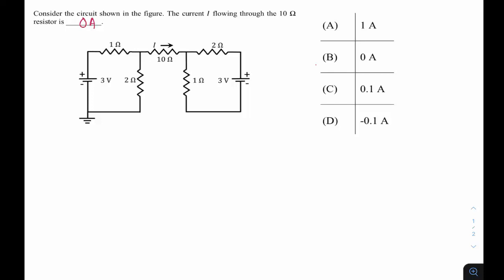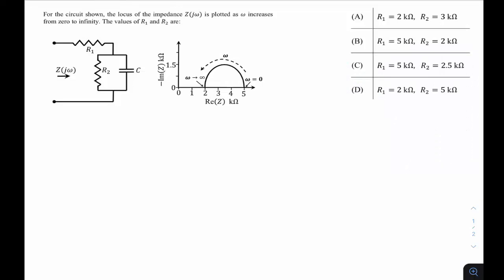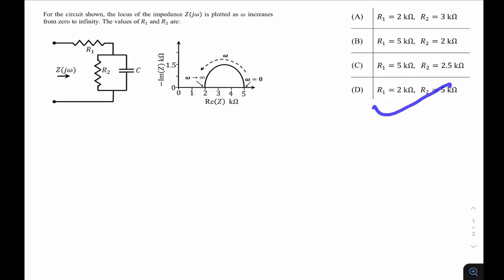The next question from GATE 22 ECE, network subjects, is related to the locus diagram concept — if you know polar plot basics you can answer this easily. For the given circuit, the locus of impedance Z(jω) is plotted as ω increases from zero to infinity. We need to find the values of R1 and R2 that match the given plot.